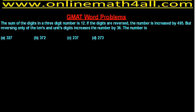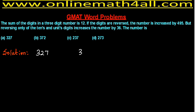Students may have a question: when we try to solve the problem with the options, how can we do it? I will show you. The options are: option A is 327, option B is 372, option C is 237, and option D is 273.